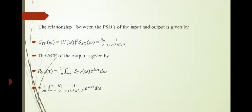The autocorrelation function of the output is given by Ryy of tau equal to 1 by 2 pi integral minus infinity to infinity Syy of omega e power i omega tau d omega. Here we substitute our Syy of omega value. Therefore, integral n0 by 2 into 1 by 1 plus omega square r square c square e power i omega tau d omega.